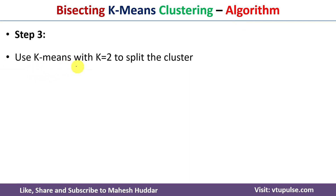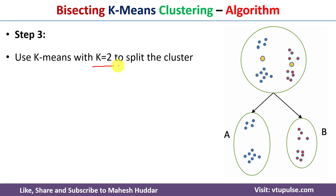In step three, we use the k-means clustering algorithm and divide the data into two clusters. We apply k-means on the given dataset and divide the data into two clusters — let's say we get cluster A and cluster B.